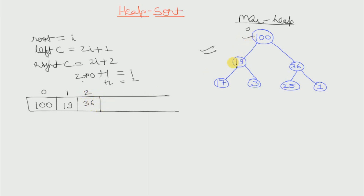Now 100 is completed, then we move on to 19. The left and right child of 19 will be stored similarly at 2i plus 1 and 2i plus 2. So at index 3, 17 will be stored, and at index 4, 3 will be stored. Following this, 25 and then 1 are also stored like this. This is how a heap is stored using an array.